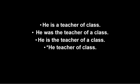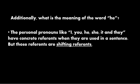Consider how the meaning of the sentence changes when those small words change. 'He is a teacher of class' suggests this person is a role model for manners. 'He was the teacher of a class' indicates past tense. 'He is the teacher of a class' doesn't specify which class. And 'He teacher of class' is clearly erroneous. Notice how a simple change in those small words makes a big difference to the meaning of the sentences.